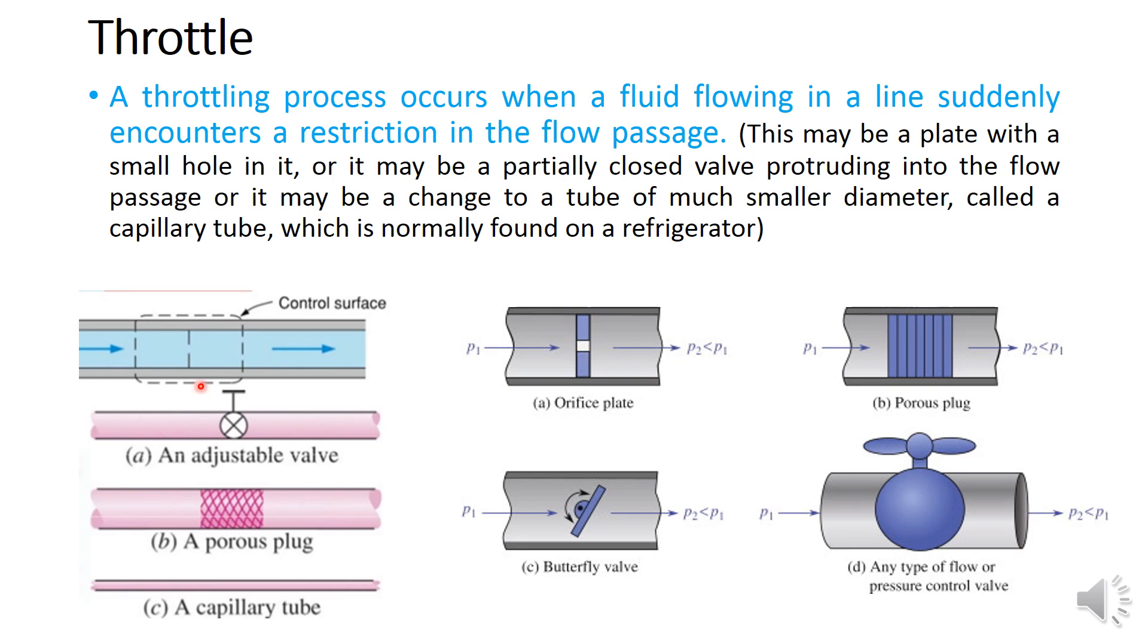It may be a plate with a small hole in it as you can see here, or it may be a partially closed valve protruding into the flow passage, or it may be a change to a tube of much smaller diameter called a capillary tube which is normally found on a refrigerator. So these are few of the examples where we can find the throttling process.